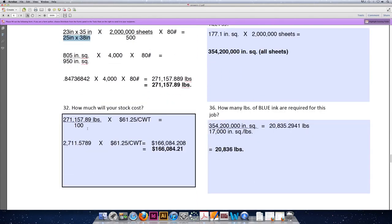Last but not least, to calculate the cost of this stock, we will take the weight, 271,157.89 pounds, divide it by 100, and multiply it by the 100 weight price. We divide by 100 because the price over here, 61.25, is the price for every 100 pounds of paper.